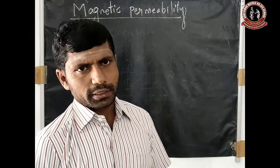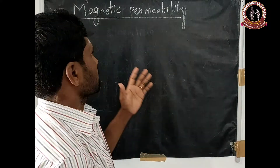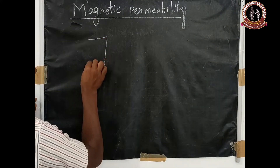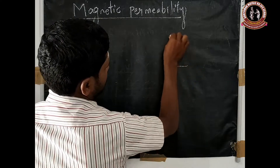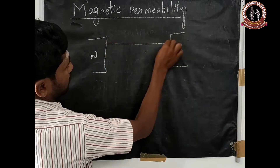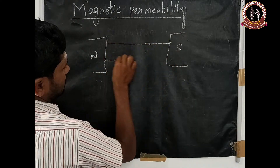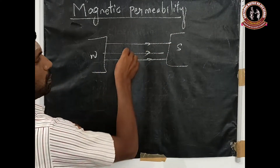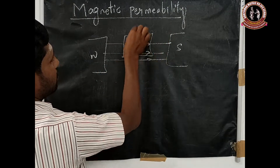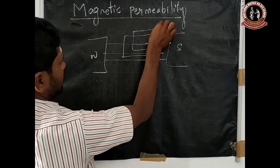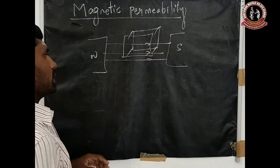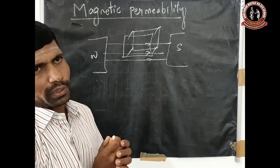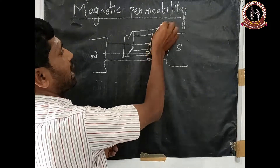The second property is magnetic permeability. A north pole and south pole produce a magnetic field between them. A non-magnetic material placed in this magnetic field acquires magnetic properties and gets magnetized.